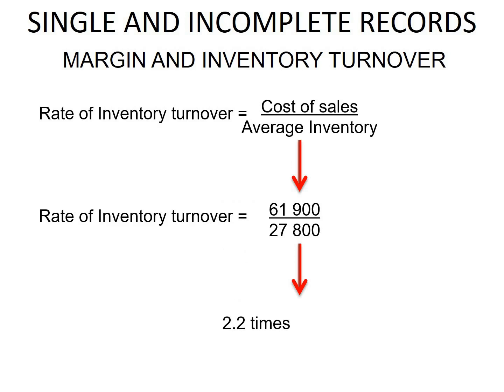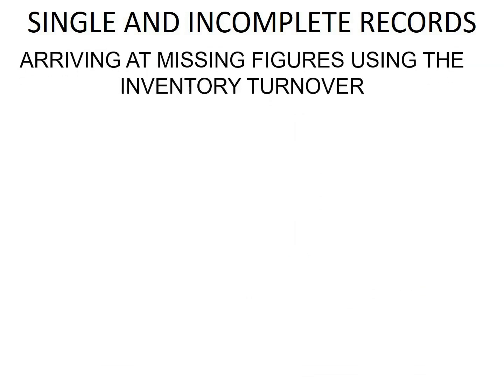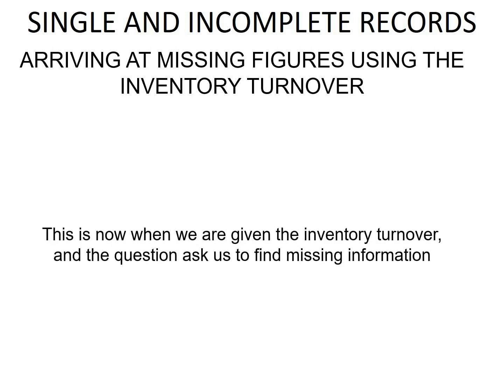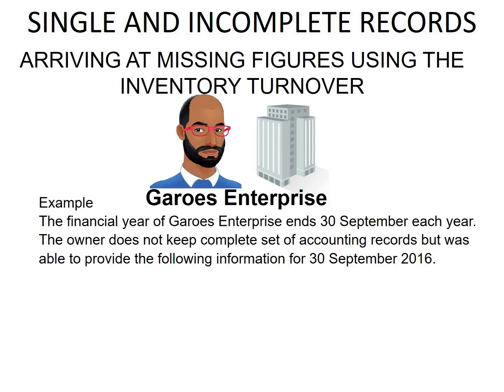It's important to note that you should round this to the next whole number, which is 2. Now let's have a look at arriving at missing figures using the inventory turnover. This is when we are given the inventory turnover and the question asks us to find the missing information.